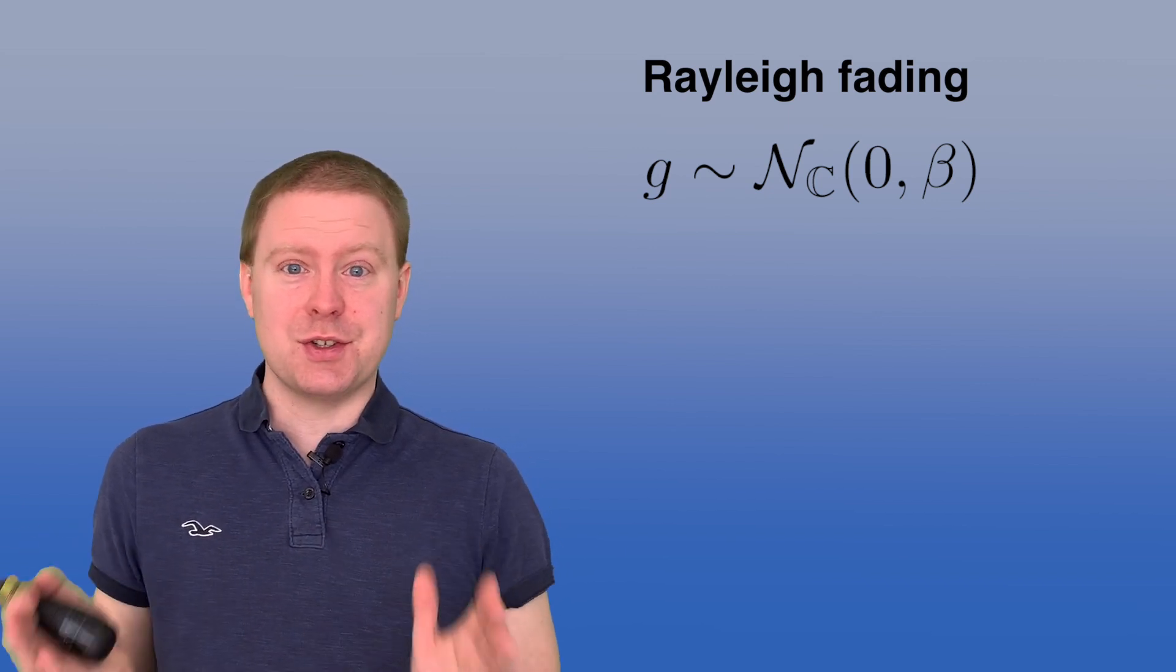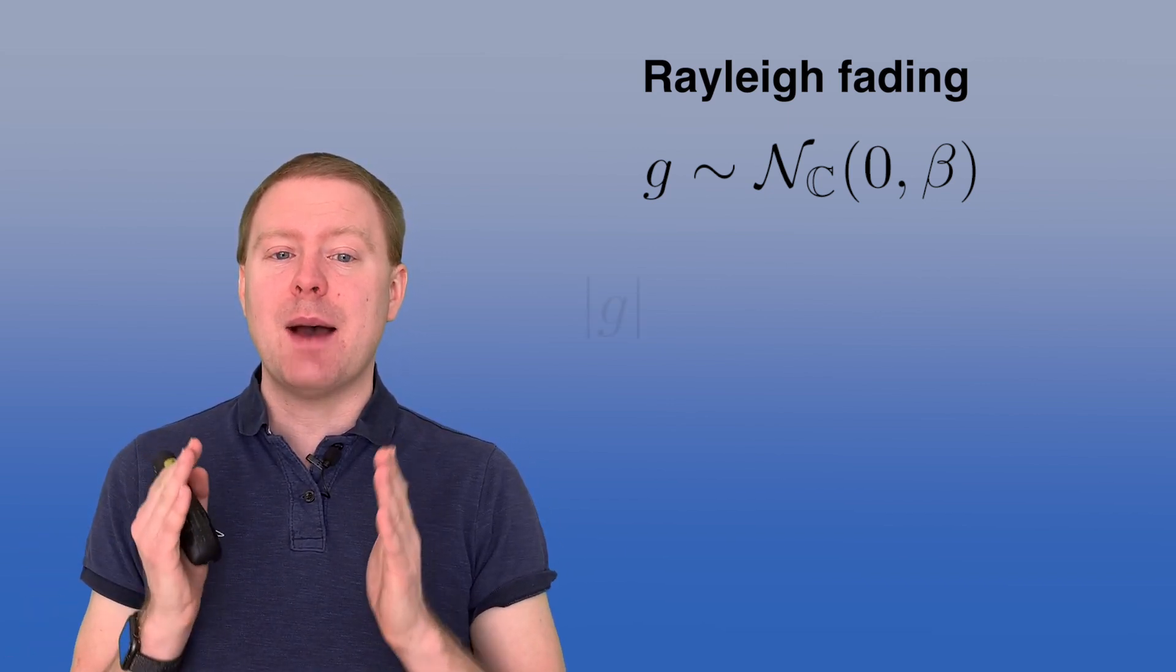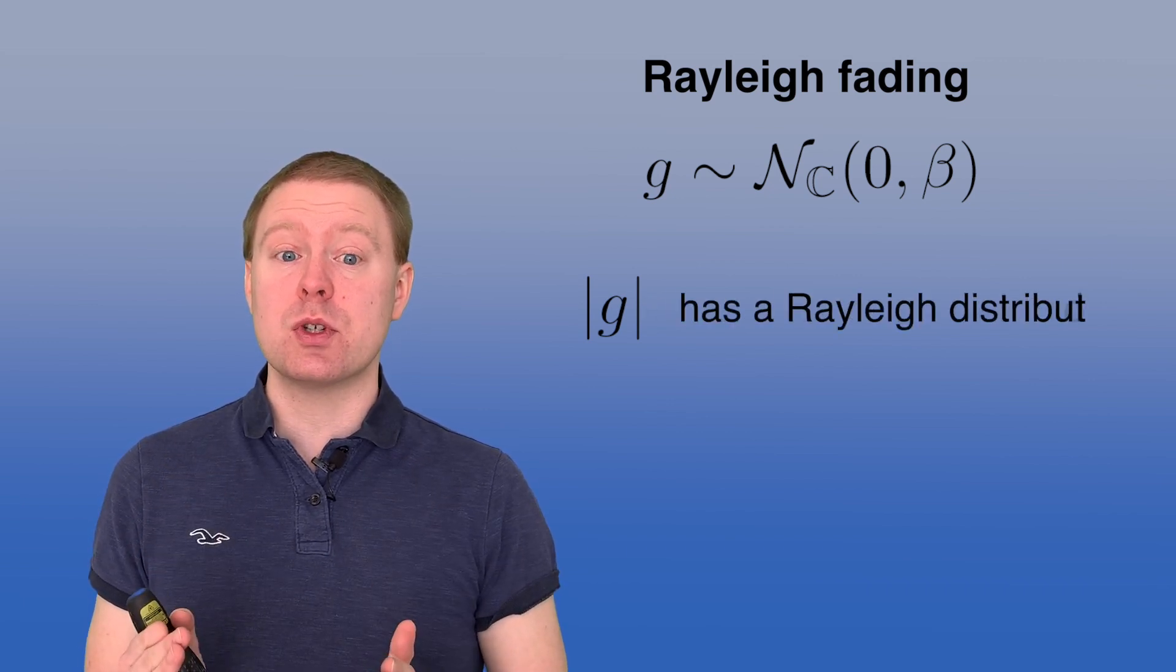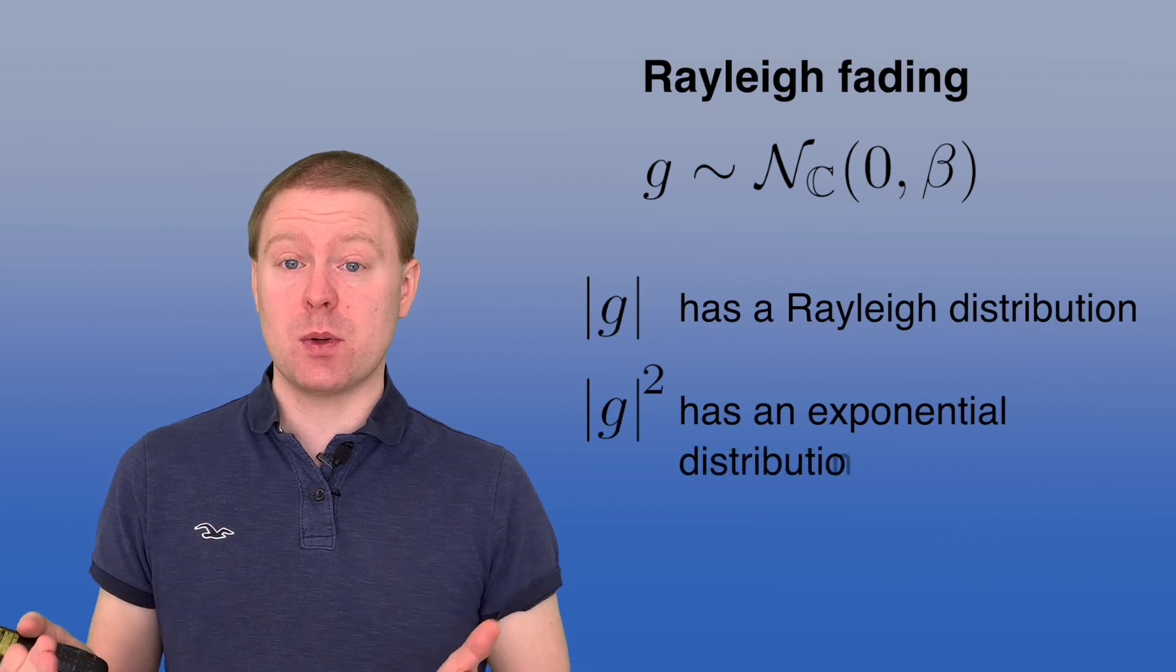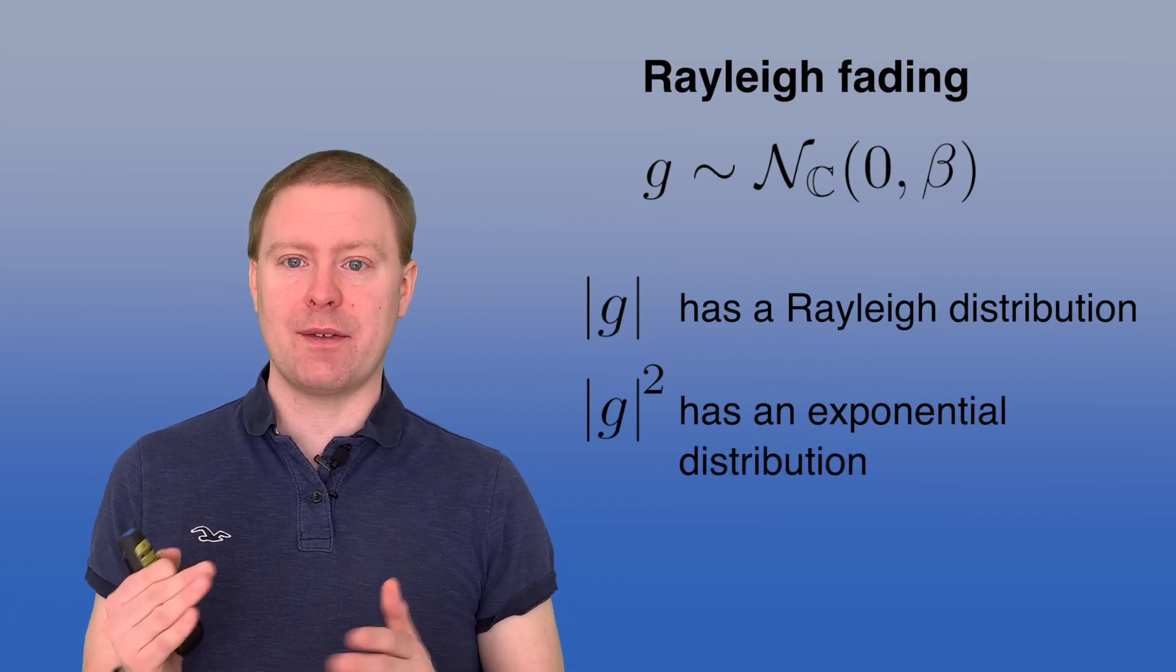And this model is called Rayleigh fading. Well, there is a Gaussian distribution, but the thing is that the absolute value of G has a Rayleigh distribution, and also the absolute value squared has an exponential distribution. But it's the Rayleigh distribution that has given it a name.